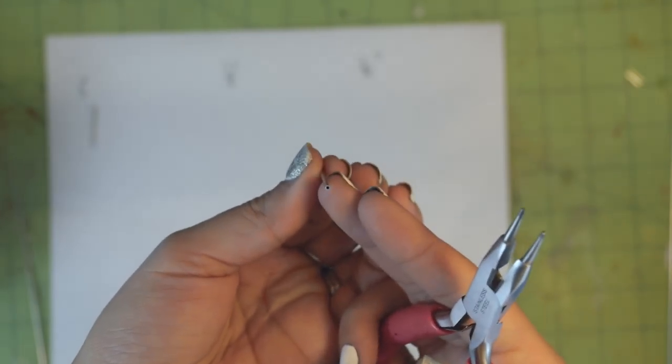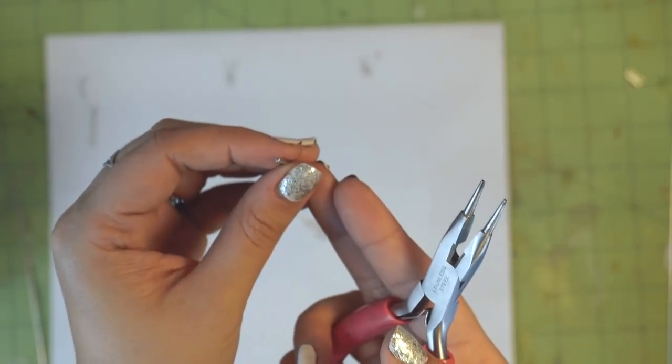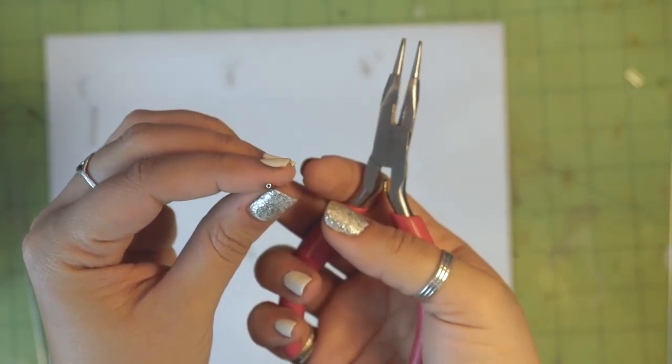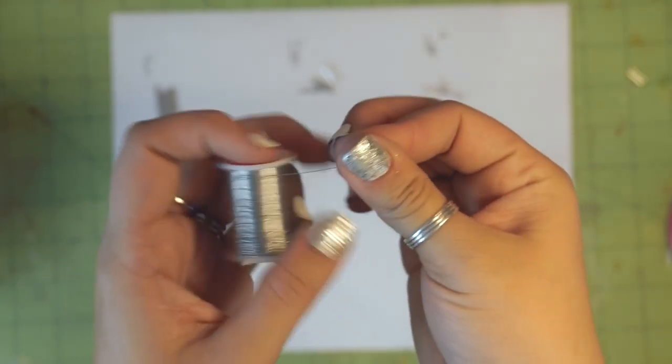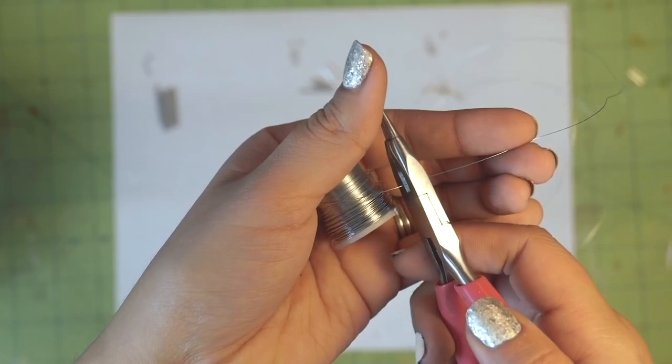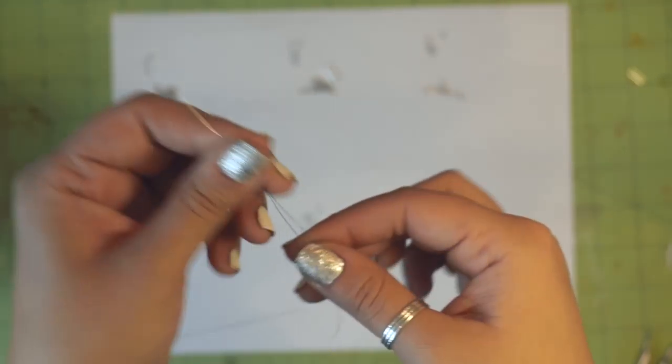Once you're done cutting, check each end to make sure it's not squished down too much. If it is, use your pliers to gently round it back out. Cut a piece of wire to about 36 inches. Find the midpoint and fold it in half.